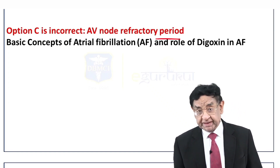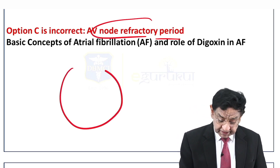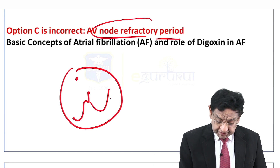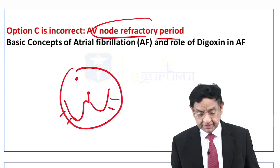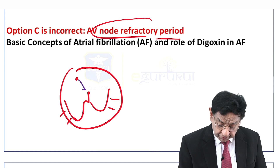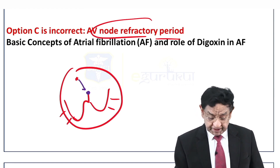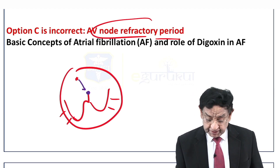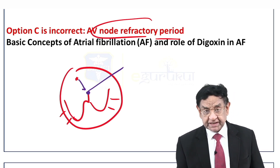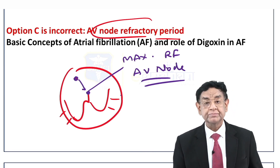Let's discuss the basic concept about the refractory period. We have the SA node, AV node, bundle of His, and Purkinje fibers. An impulse comes from the SA node to the AV node, but the AV node has a maximum refractory period — impulses have to stay for some time before going down. In the entire conduction tissue from SA node to Purkinje fiber, the maximum refractory period is at the AV node.